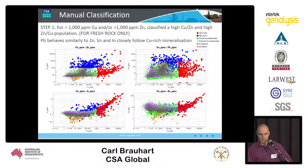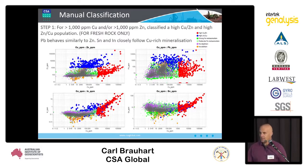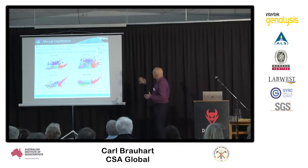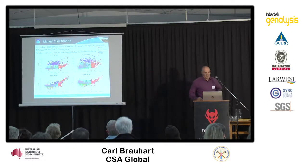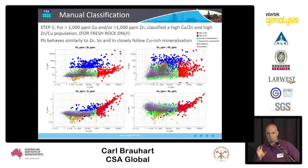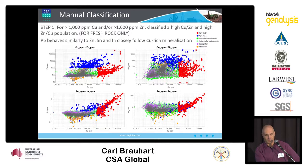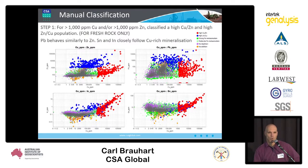We're going to move on to another system - a structurally controlled copper system somewhere in the world. This is just a workflow. We're going to end up classifying some copper mineralisation, some zinc mineralisation, some iron metasomatism, and some sodium depletion. Looking at copper versus zinc, we can see the elements that coincide. The copper-rich mineralisation is also indium-rich and tin-rich, whereas the zinc mineralisation is lead-rich. So we've got some important patterns already.